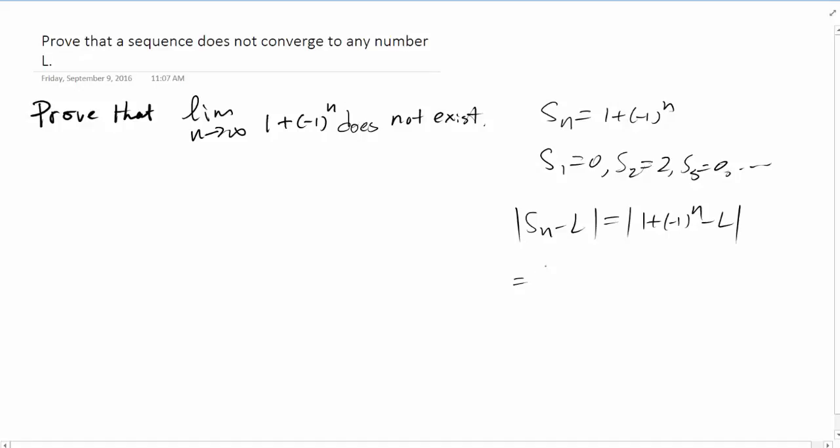We see this is going to be simple - we have two cases. If n is odd, we have -L. If n is even, we have 2 - L. We cannot possibly make both numbers small.